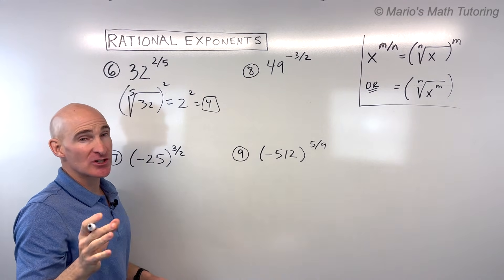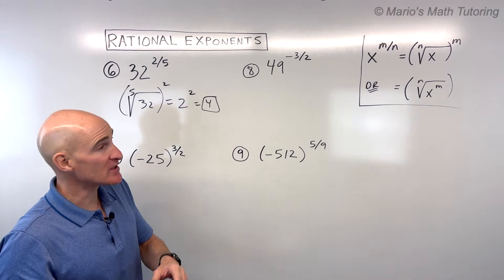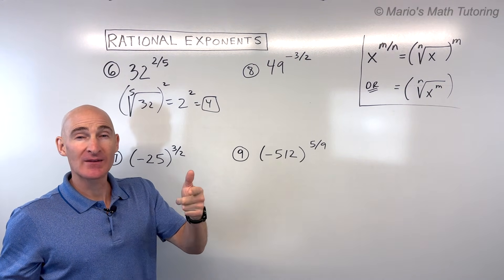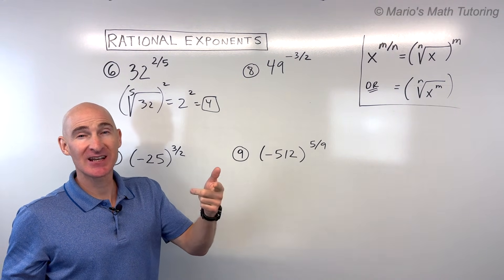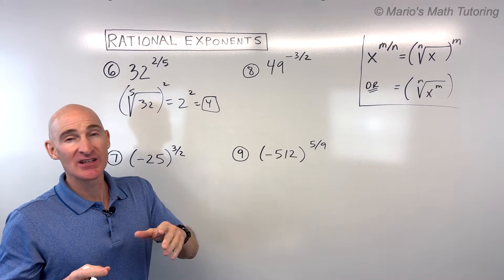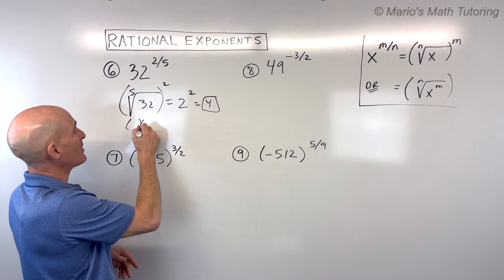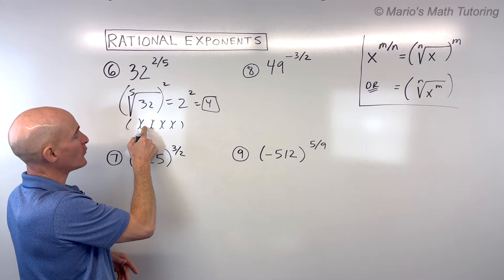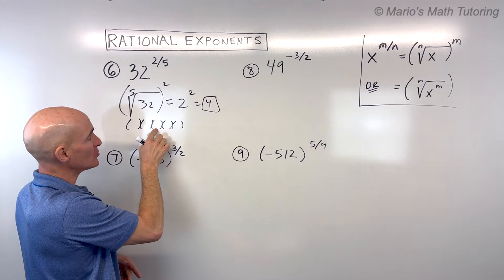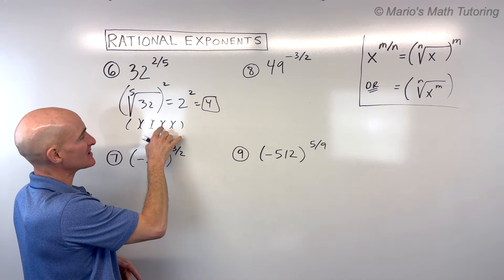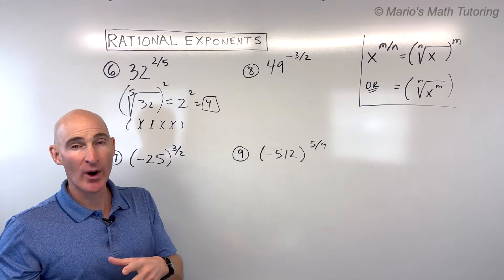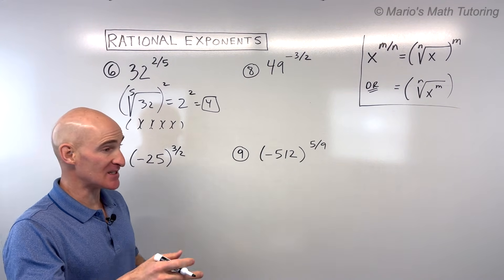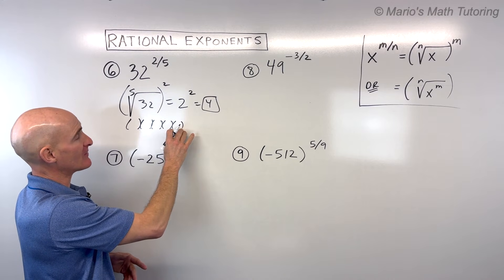A common mistake is to keep squaring the result — doing 2×2=4, then 4×4=16, then 16×16=256. That's not what we're doing. We want that same number five times: 2×2=4, 4×2=8, 8×2=16, 16×2=32. You don't want to keep squaring; you just want that one number repeated five times.